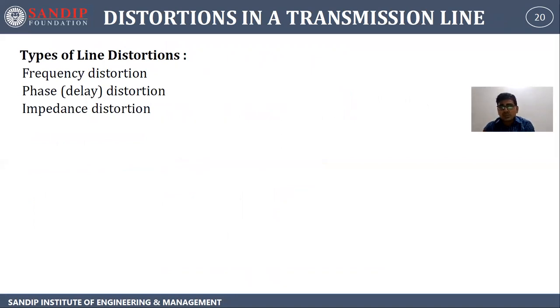Now let's see distortions in a transmission line. There are three major distortions: frequency distortion, phase or delay distortion, and impedance distortion.